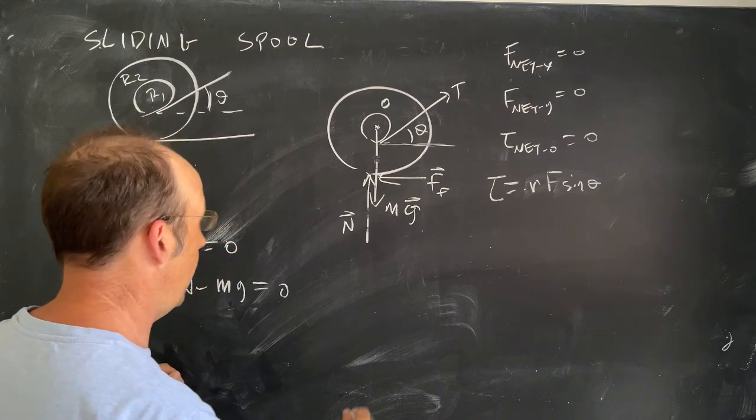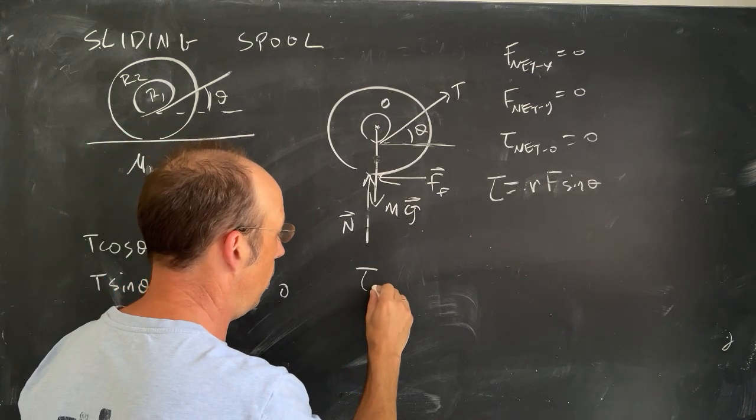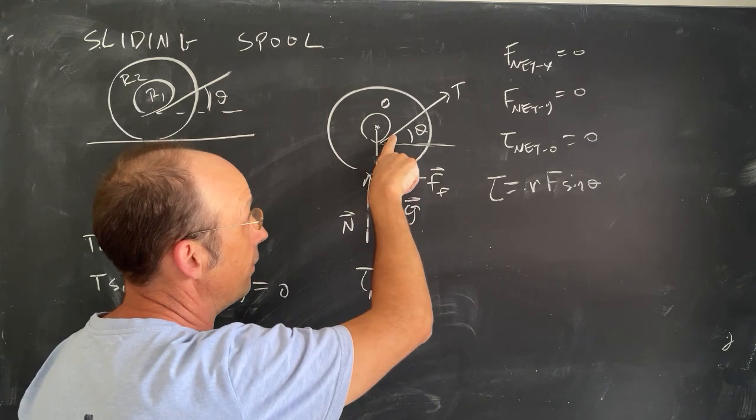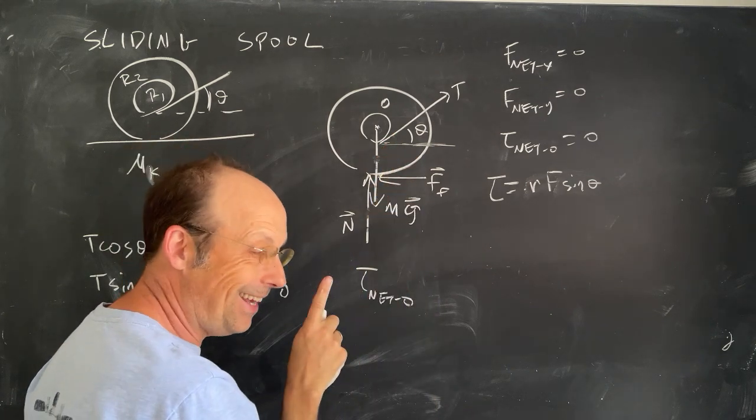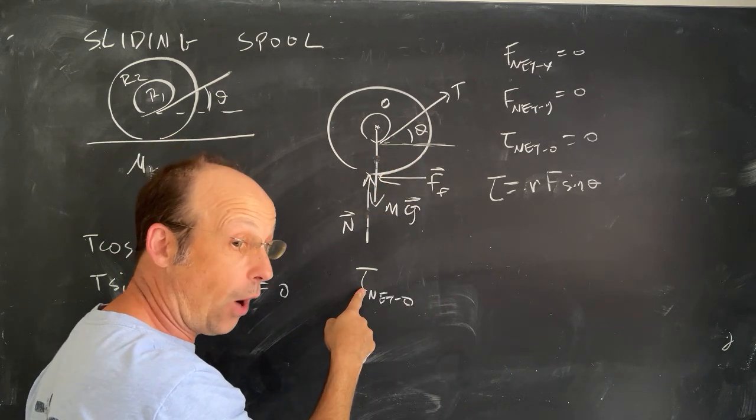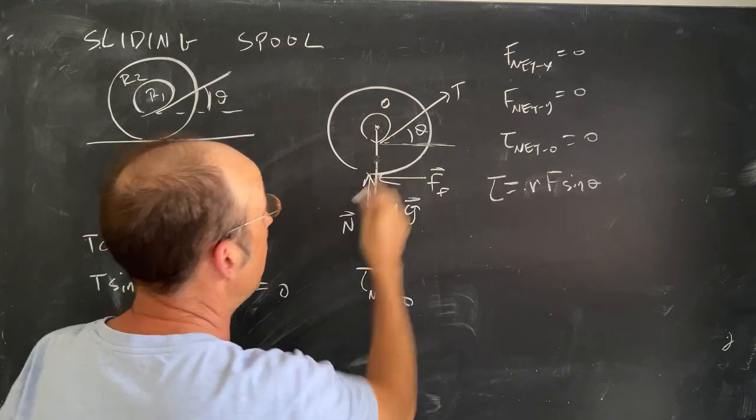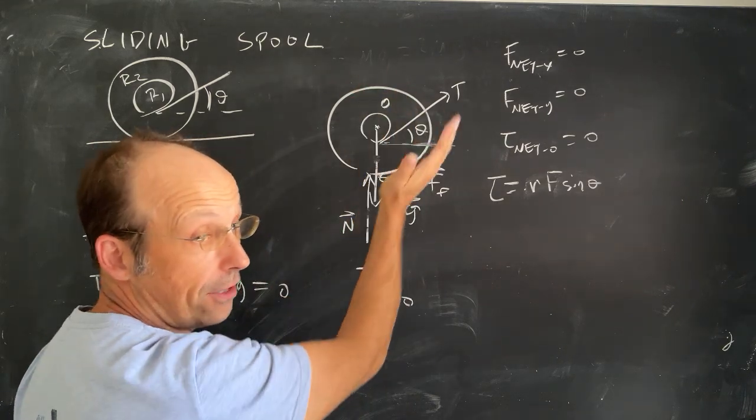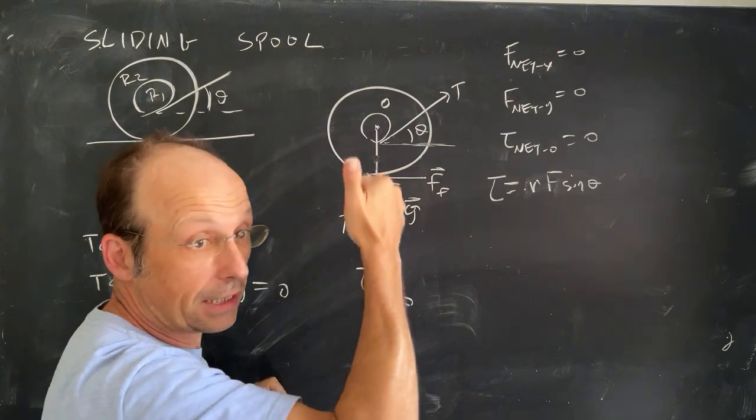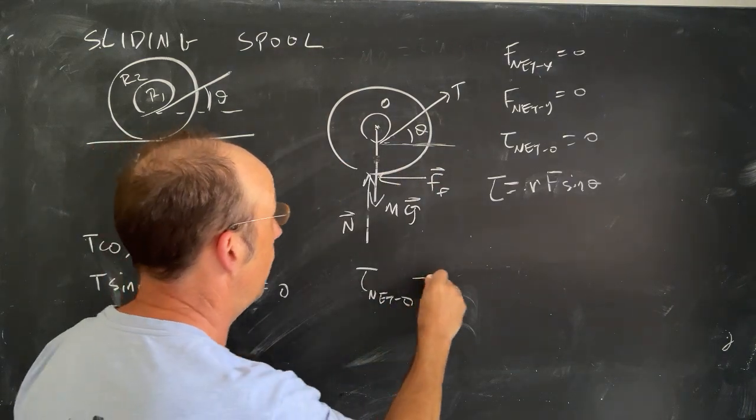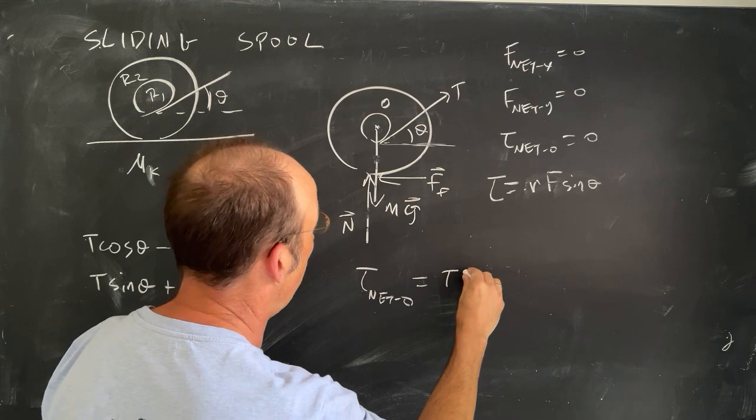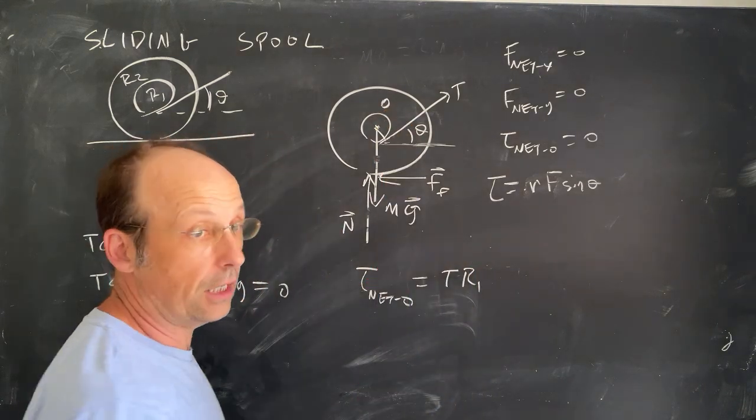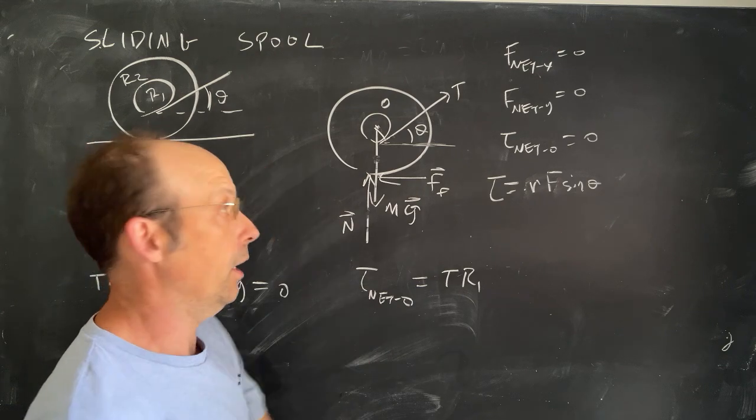Okay. So now I can write torque net about the point O. I first have this tension, which is not a T. That's not a T. That's a tau, just so you know. That's going to exert a torque that would want to make it rotate this way, counterclockwise. So that's a positive torque. It's going to be T times R1. And then the angle between those is 90 degrees. The sine of 90 is 1.